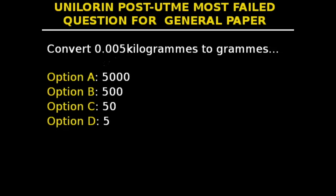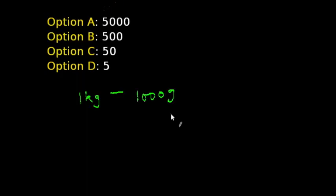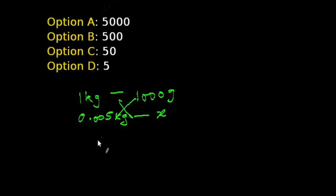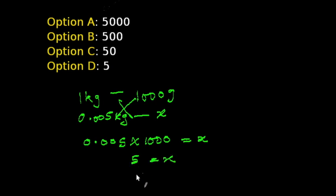What's up guys, this is question 40 in our series. Convert 0.005 kilograms to grams. You should know that 1 kilogram equals 1,000 grams. So, 1 kg equals 1,000 g. We need to find what 0.005 kg equals: 0.005 times 1,000 gives us 5 grams. So 0.005 kilograms equals 5 grams, and the answer to this question is option D.